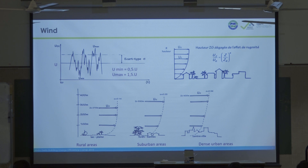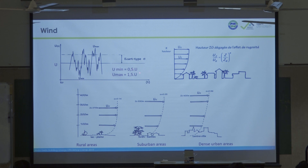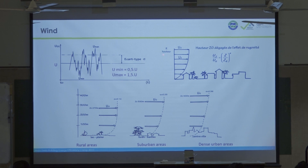Wind is a very fluctuating phenomenon — it varies a lot from one second to another in direction and in intensity. You have a mean and a standard deviation; most of the time the variation from the mean is 0.5 times the mean or 1.5 times. To measure this, you have to measure the wind every 10 seconds at a height of 10 meters — this is the standard for collecting weather data.